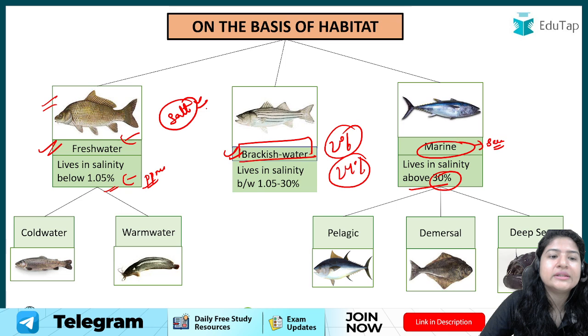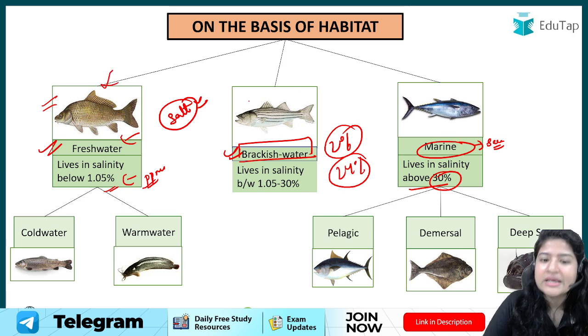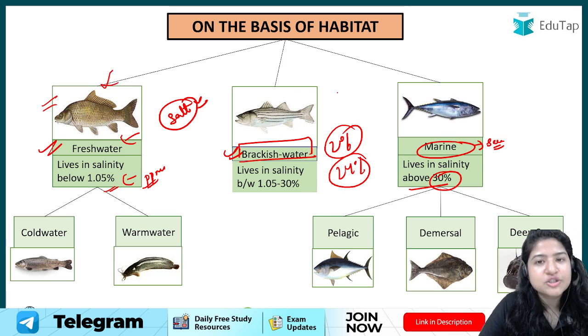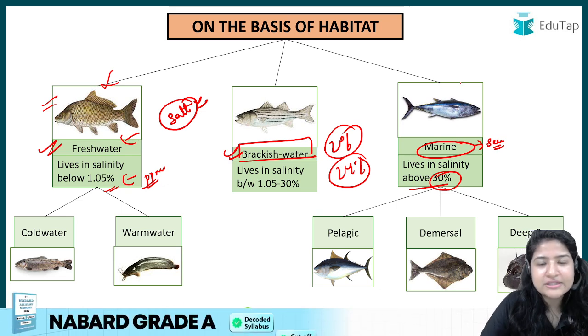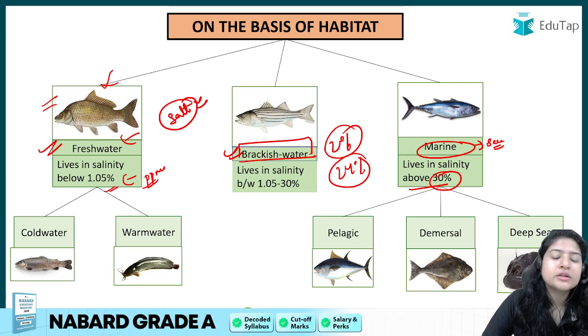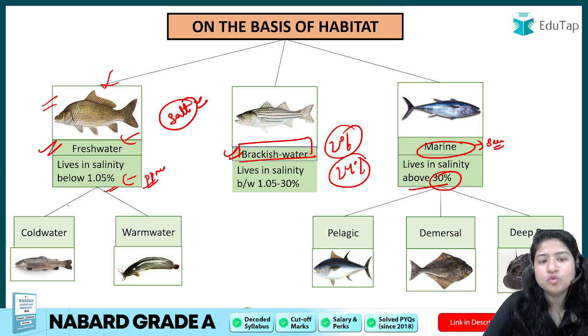So we have three habitat categories of fish: fresh water fishes, brackish water fishes, and marine water fishes. Fresh water can be further divided into cold water and warm water types.